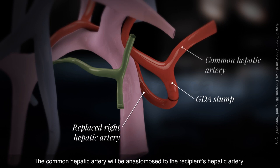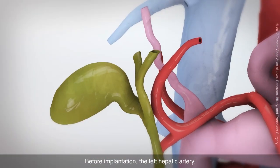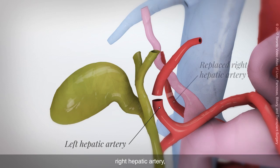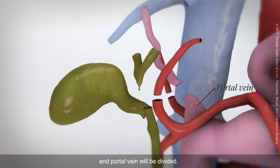The common hepatic artery will be anastomosed to the recipient's hepatic artery. Before implantation, the left hepatic artery, right hepatic artery, bile duct, and portal vein will be divided.